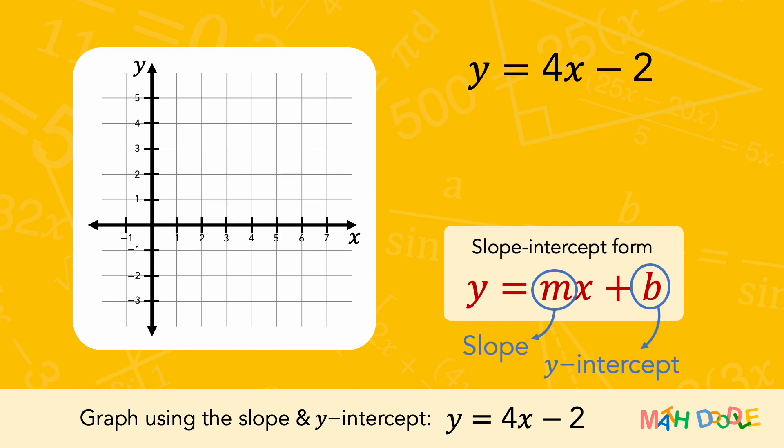By comparing this equation with the slope-intercept form, we can see that the equation has a y-intercept of minus 2. We can write the y-intercept as an ordered pair. Let's plot the y-intercept in a coordinate system.